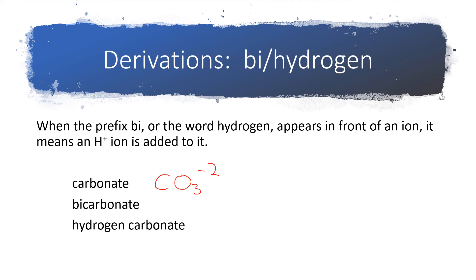So, for instance, the carbonate ion is CO3 with a minus two charge. But bicarbonate adds an H plus to that. So, when we go to write the formula for bicarbonate, we're going to write an H out in front. And then carbonate is the CO3. But now we also have to combine their charges. The hydrogen was a plus one. The carbonate was a minus two plus one minus two equals minus one. So, the bicarbonate ion is HCO3 minus one.